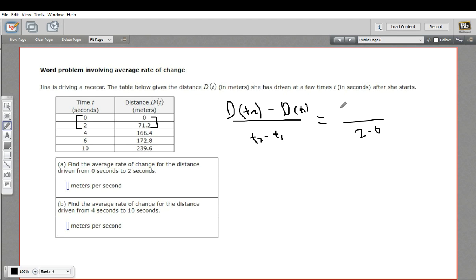So D(t₂) is 71.2 and D(t₁) is zero. So this is really 71.2 minus zero, which is 71.2 divided by two, and that is 35.6. So the average rate of change is 35.6, and this is actually meters per second.